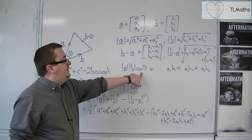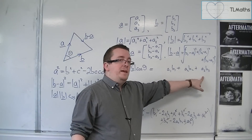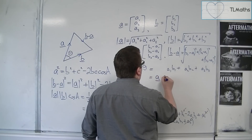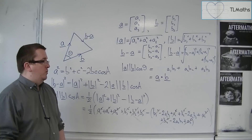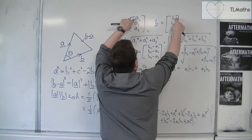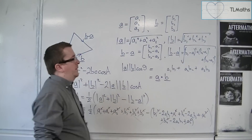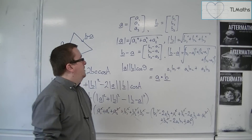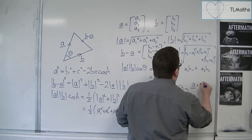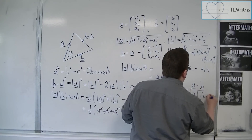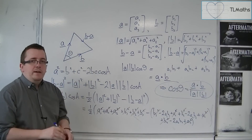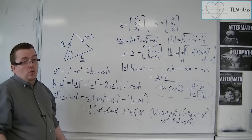So what we're left with is: mod a times mod b times cos theta equals a1b1 plus a2b2 plus a3b3. This is what we represent as the scalar product, written as a dot b — otherwise referred to as the dot product — where you multiply corresponding components together. Therefore, cos theta equals a dot b divided by mod a times mod b, obtained by dividing both sides by mod a mod b. That is the scalar product formula, which enables us to work out the angle between two vectors in two or three dimensions.